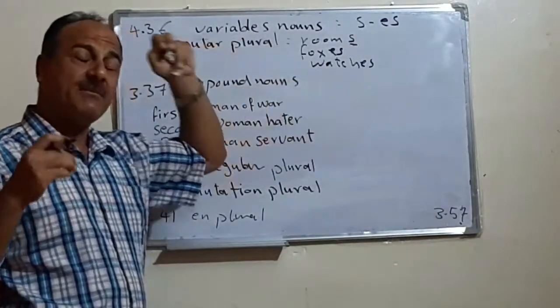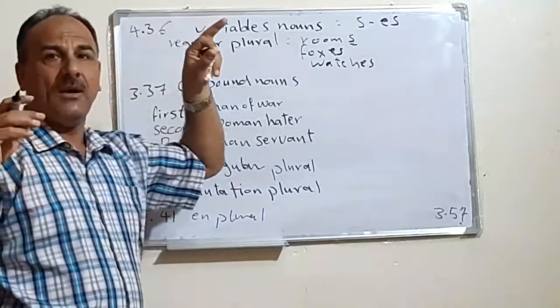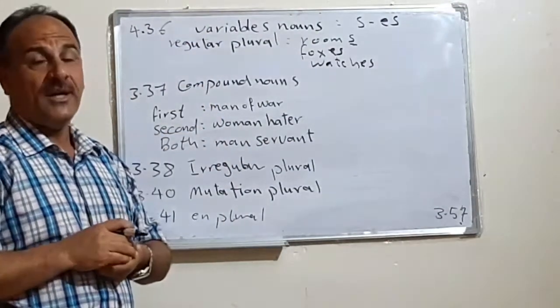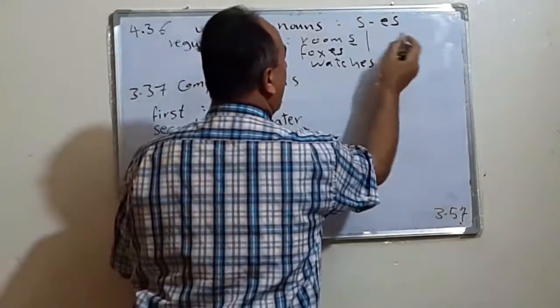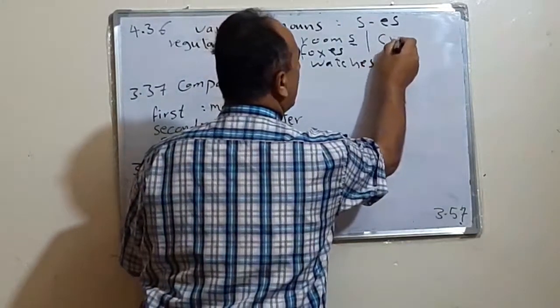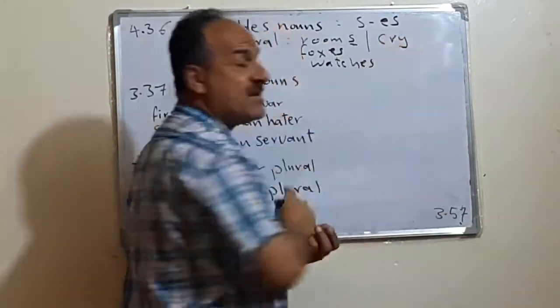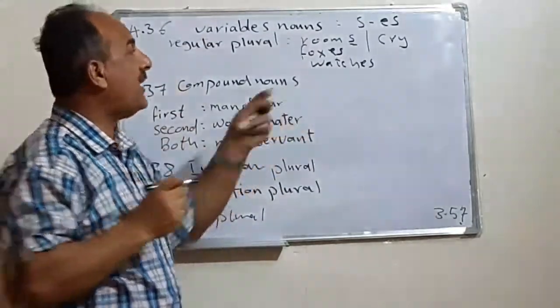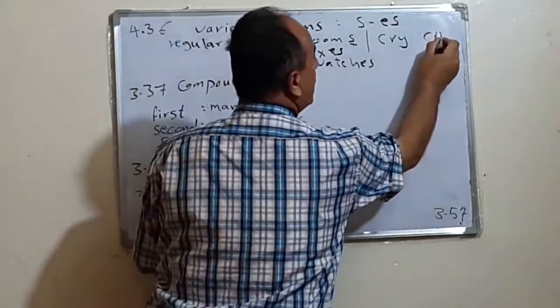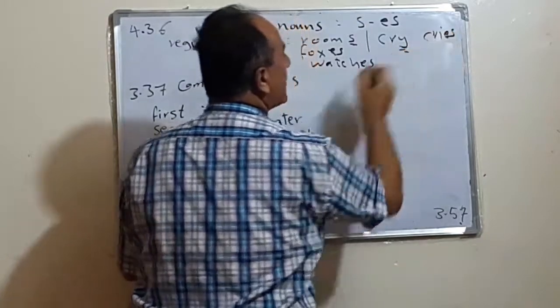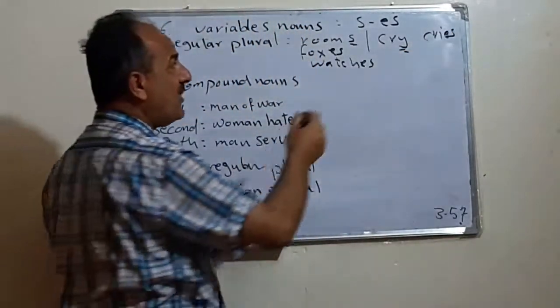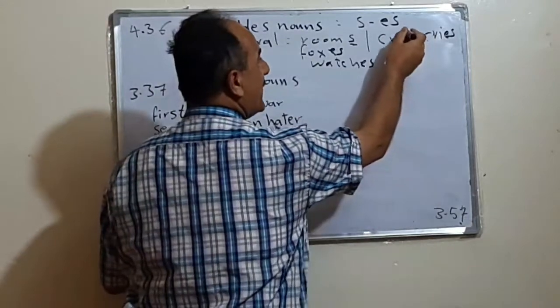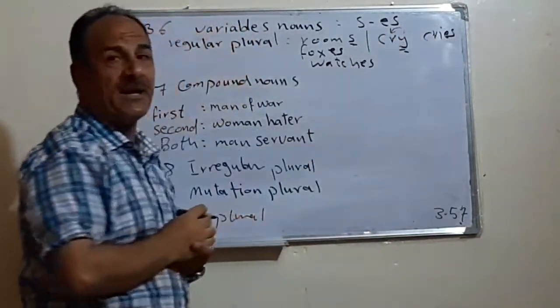This is a part of regular. Sometimes we change the Y at the end of the word into IES. For example, if I have cry, not as a verb but as a noun, just one cry or scream, we change it into cries. We change this Y. Why? Because this Y is preceded by a consonant.